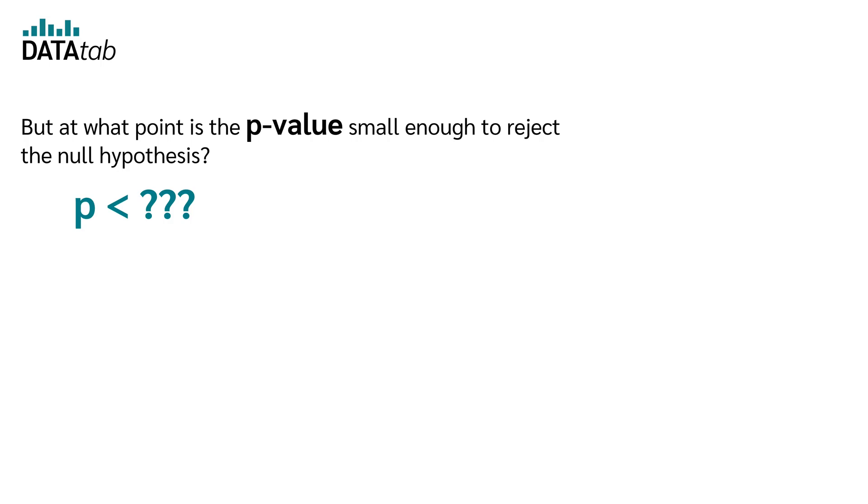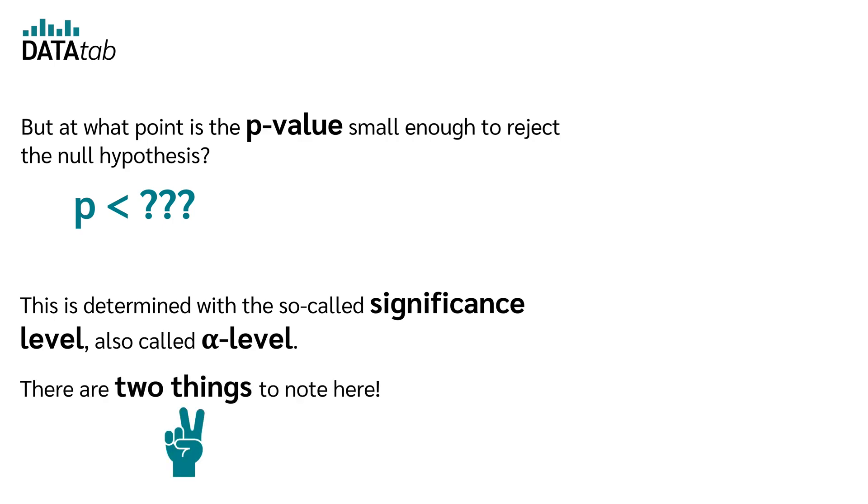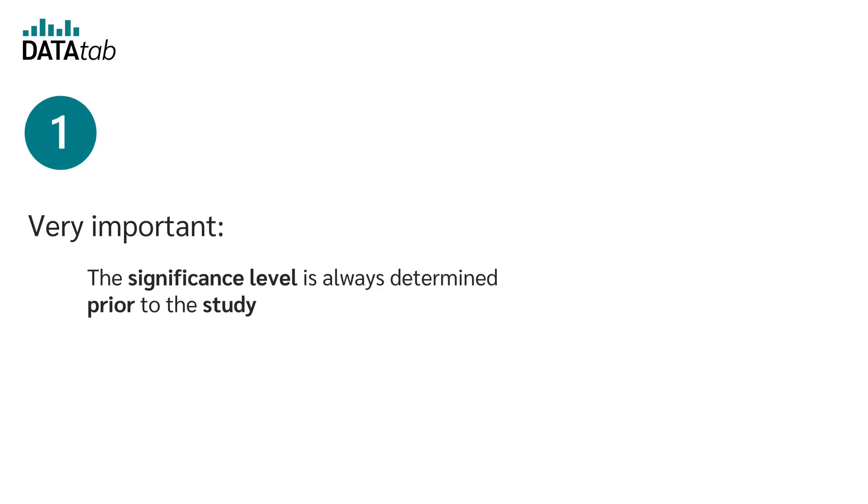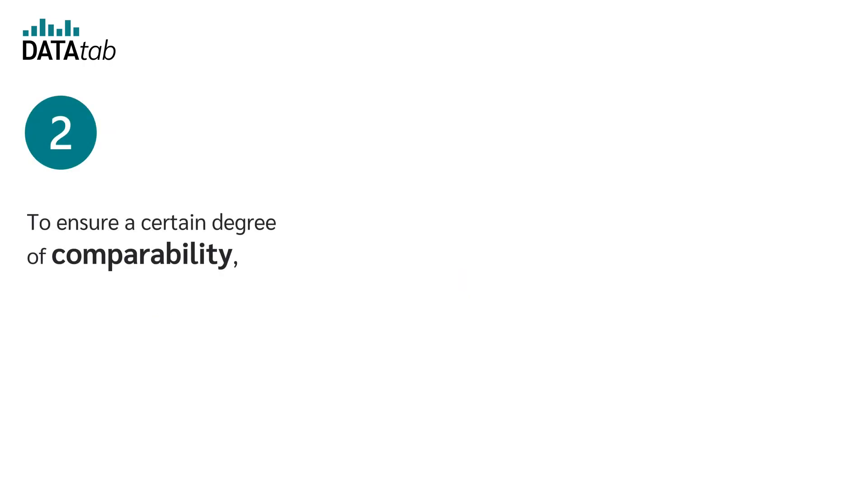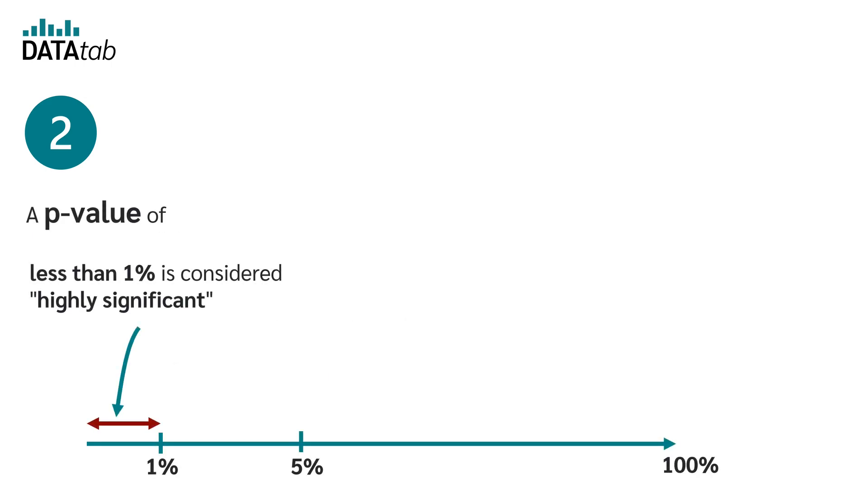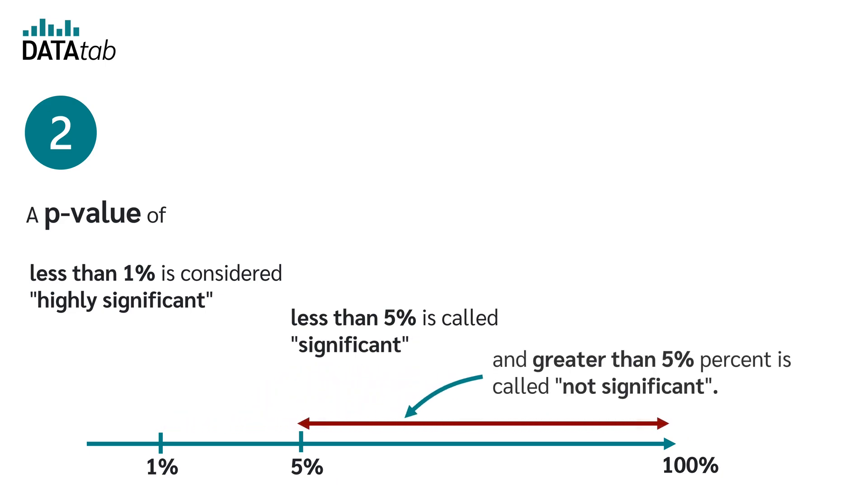But at what point is the p-value small enough to reject the null hypothesis? This is determined with the so-called significance level, also called alpha level. There are two things to notice here. One: very important, the significance level is always determined prior to the study and cannot be changed afterwards in order to finally obtain the desired results. Two: to ensure a certain degree of comparability, the significance level is usually set at 5 percent or 1 percent. A p-value of less than 1 percent is considered highly significant, less than 5 percent is called significant, and greater than 5 percent is not significant.